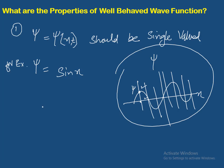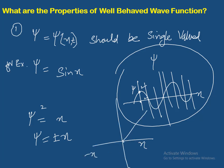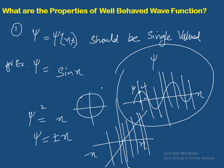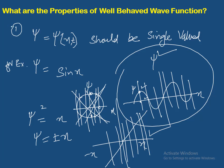Isi tarah, agar mein kuch yun likho — psi-squared equals x, means psi equals plus-minus root x — to aap deekh sakte hain ye bhi single-valued function hai. Iske baraks, agar aapko aisa function lena ho jo elliptical hai — to agar ye psi hai, ye x hai — aur aap vertical line test karein, to dekhenge aapki vertical line function ko do points pe cut kar rahi hai. So this is not a single-valued function. Aapko samajh aana chahiye ke well-behaved function ko single-valued hona zaroori hai.